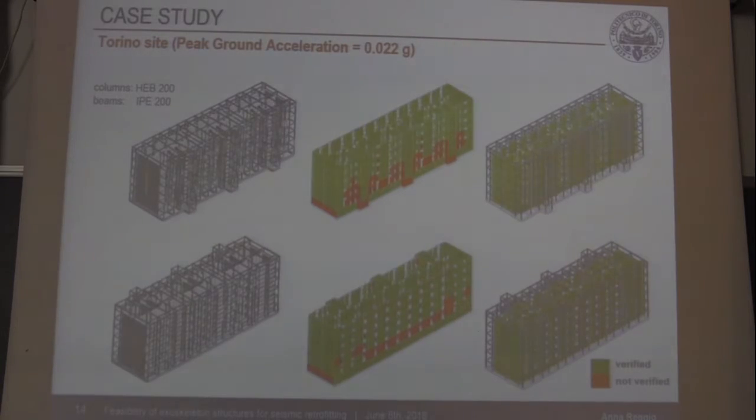The building has been subjected to two seismic inputs, one in a low seismicity site, Torino, and one in a high seismicity site, Messina. In the center you can see the finite element models of the building in the uncontrolled configuration, where you see red there are structural elements that do not verify the safety requirements by the Italian building code. After the retrofitting with the exoskeleton structure, the color green means that all the structural elements comply with the safety requirements by the code.